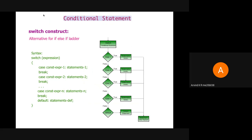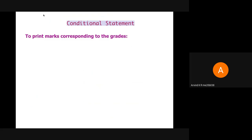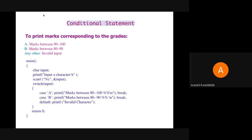It's important to note that we have a break between two cases. If we skip the break, then if case one is satisfied, both statement one and statement two get executed — this is called fall-through. Here we print marks corresponding to the grade using switch. We input the character and have a switch construct with cases A, B, and default. In case A, we print marks between 90 to 100. In case B, we print 80 to 90. In default, we print it as invalid character. Note that break is placed after case A and case B; after default, break is not necessary.